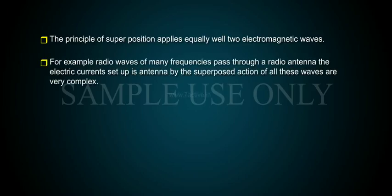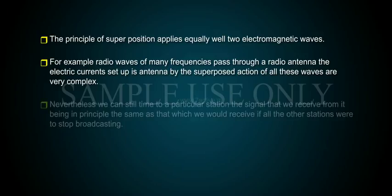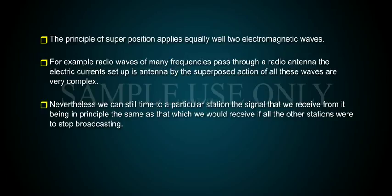For example, radio waves of many frequencies pass through a radio antenna. The electric current set up in the antenna by the superposed action of all these waves is very complex. Nevertheless, we can still tune to a particular station, and the signal we receive from it is, in principle, the same as that which we would receive if all the other stations were to stop broadcasting.